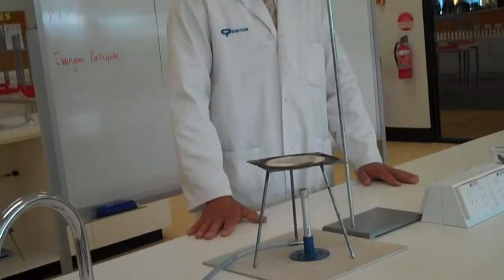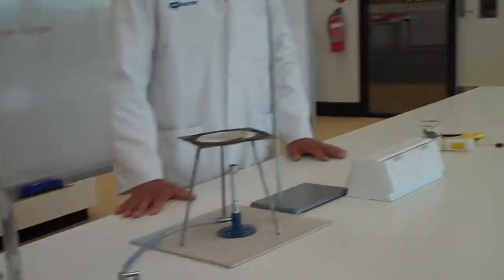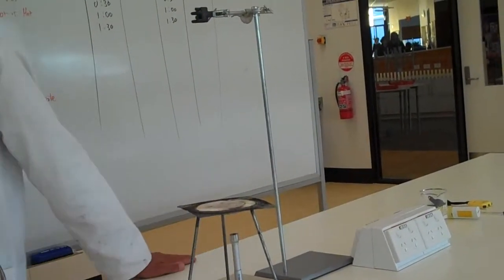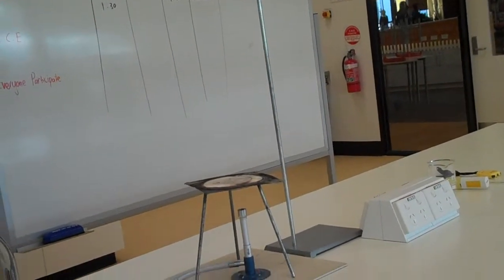We don't want to use the beaker. We want to be more accurate than that. Aidan, do you know what we need? The measuring cylinder. Excellent. The measuring cylinder. And that completes everything that we need.